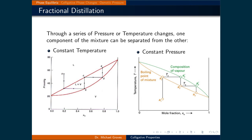The mole fraction of benzene in the liquid is roughly 0.2, but in the vapor phase it's about 0.5. Separating the vapor and raising the pressure to condense it (point C) gives a liquid with a much higher benzene concentration of roughly 0.5. The vapor from this condensed liquid has an even higher mole fraction of benzene, found at point D, roughly 0.8. Through repeated cycles of separating vapor and condensing, the solution becomes increasingly concentrated in one component — this is fractional distillation.